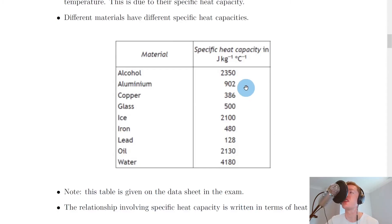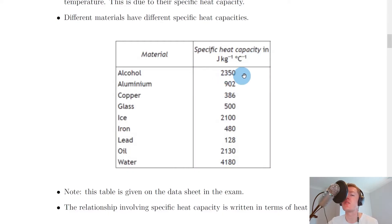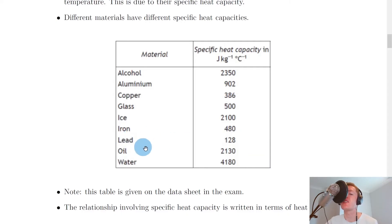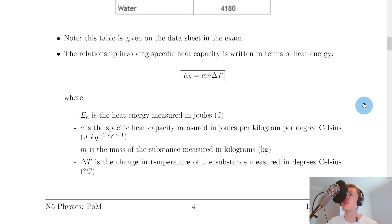If you look at this table — note that it's given on the data sheet in the exam so you don't need to remember these numbers — you'll see that water has the highest specific heat capacity of 4180 joules per kilogram per degree Celsius, followed by alcohol at 2350, then oil, then ice, and so on. Lead has the smallest specific heat capacity here, meaning it requires the smallest amount of heat energy to change the temperature of one kilogram by one degree Celsius.